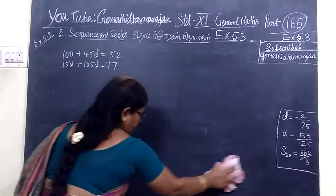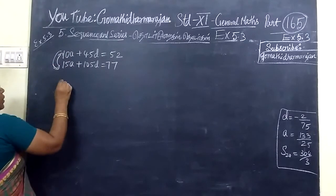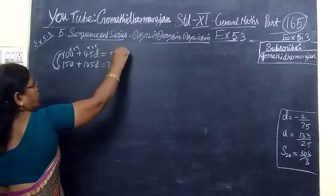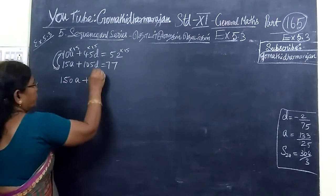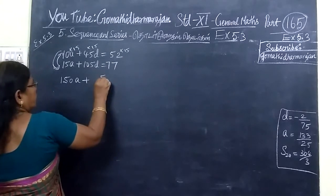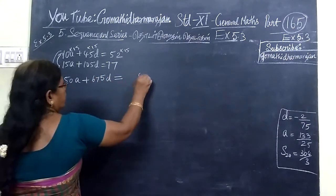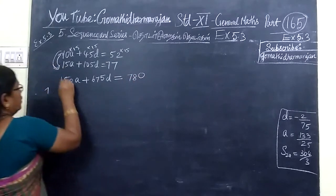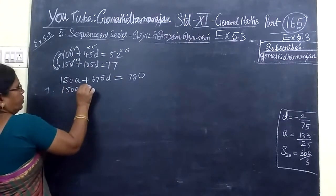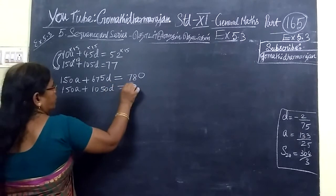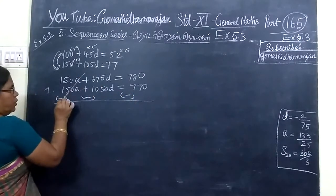Now, if you make the coefficient equal, this one multiply by 15. When you do, 150A plus 675D equal to 780. And when you do this, 10A multiplication into 10, 150A plus 1050D equal to...